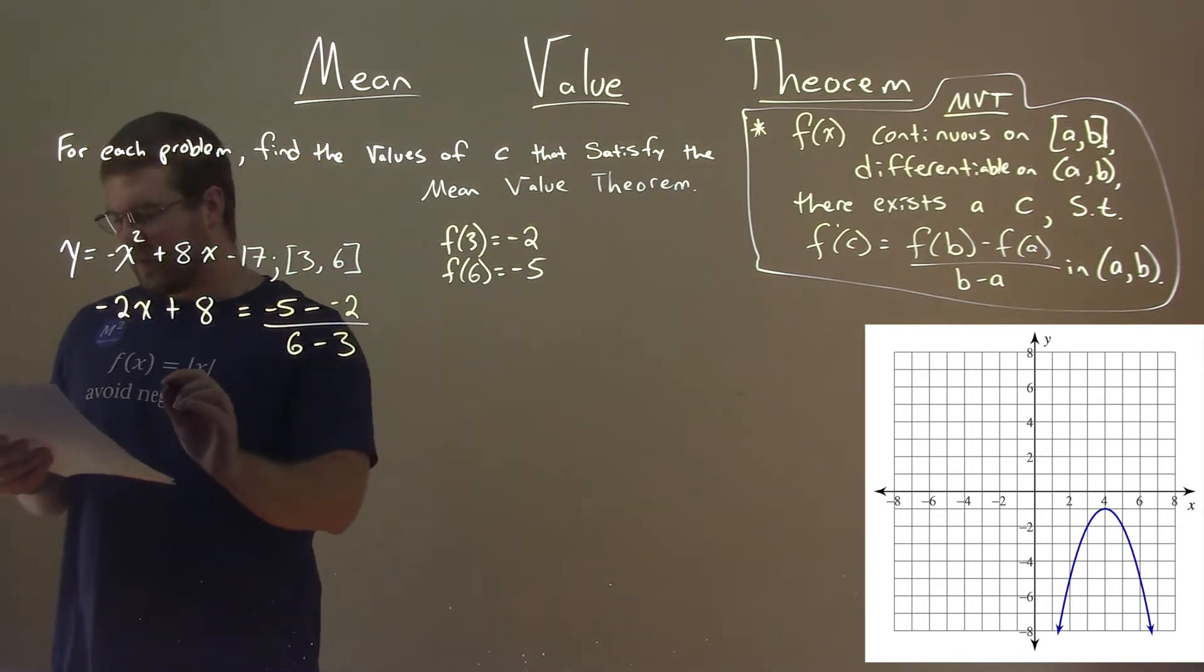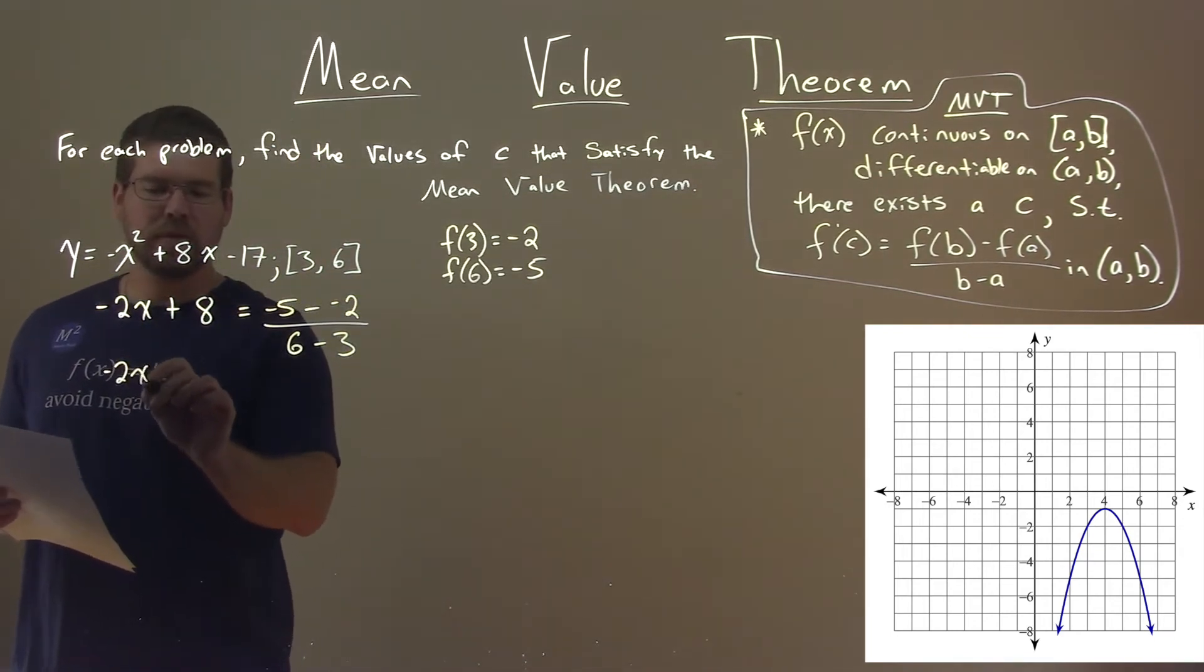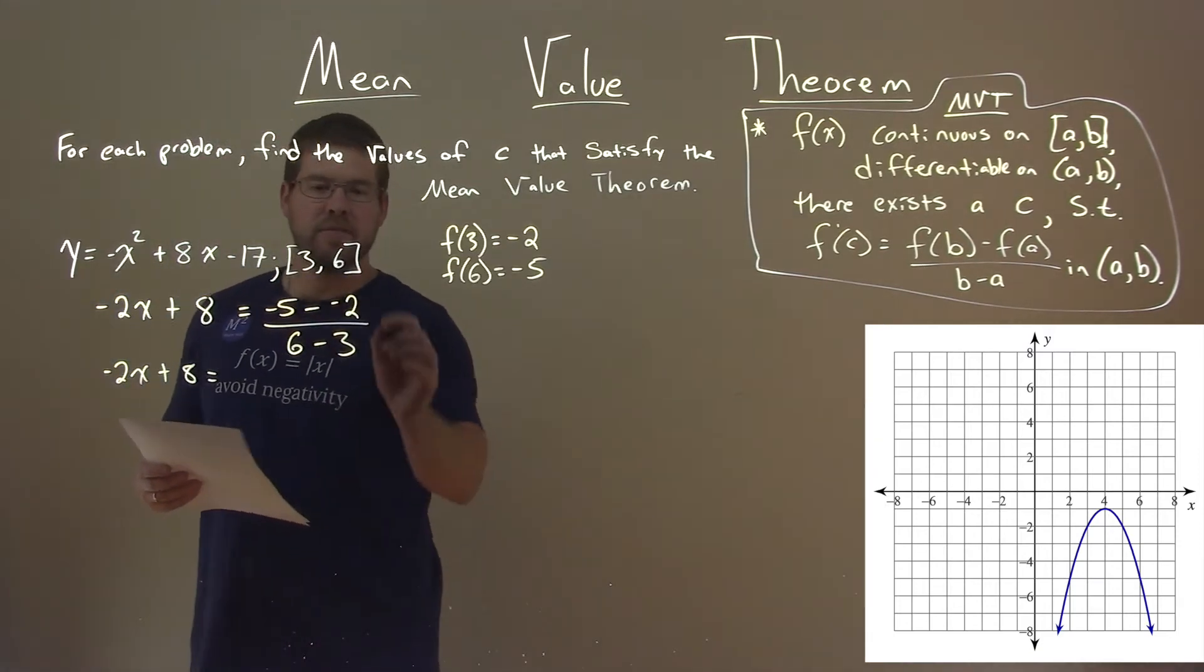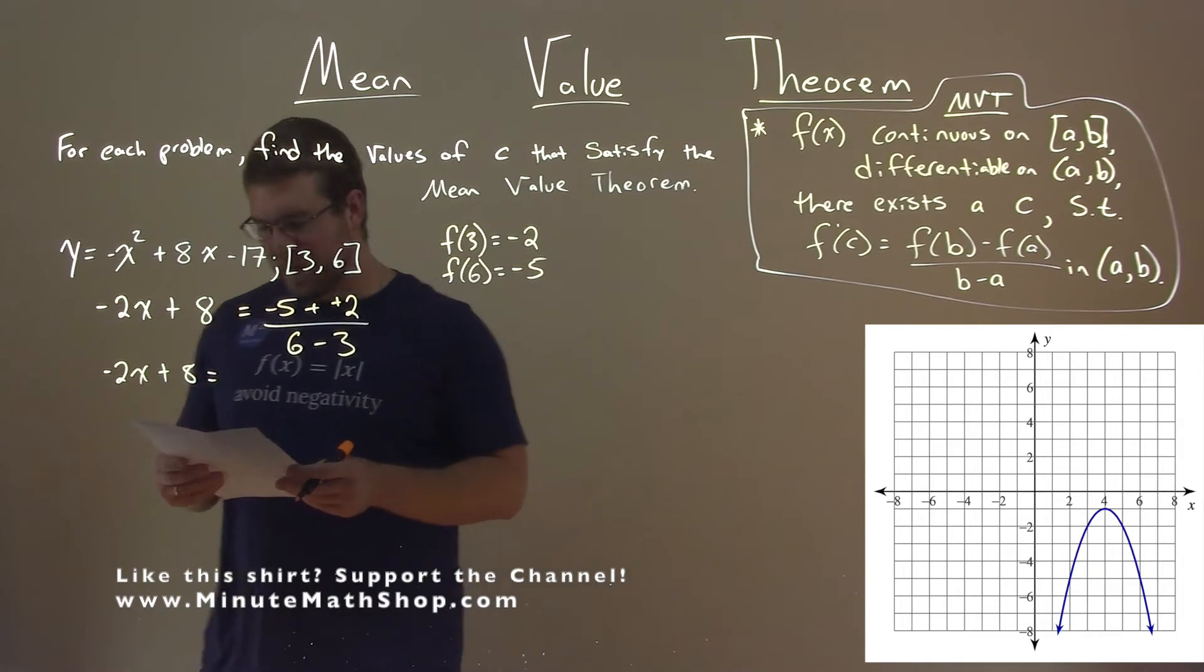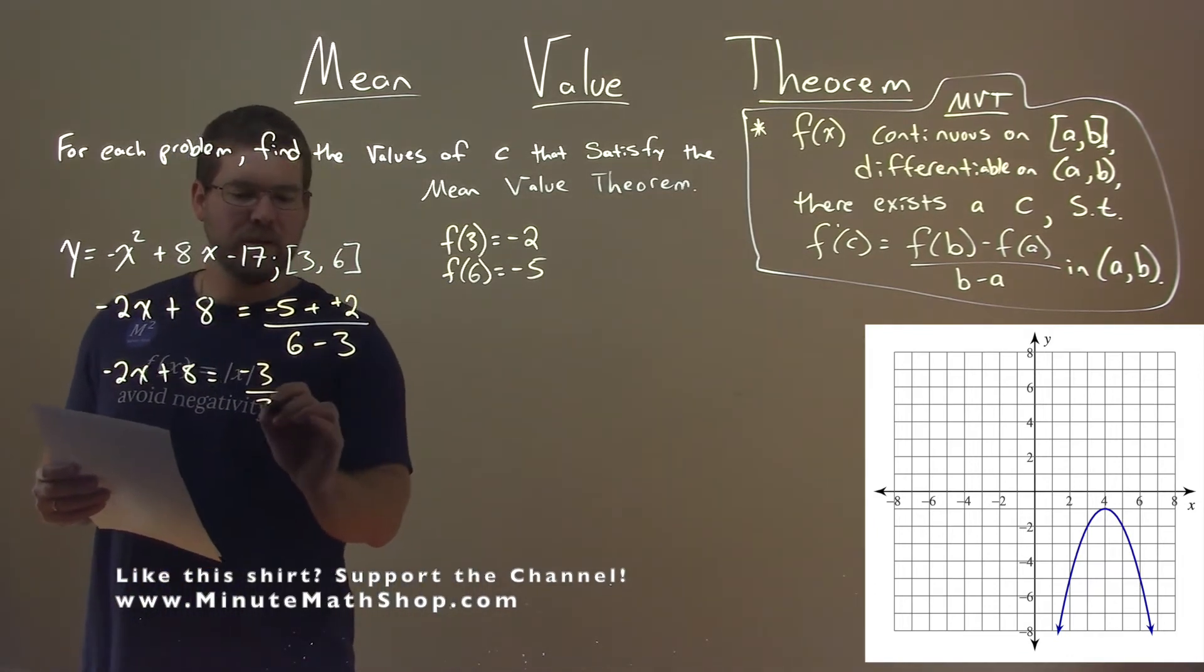From there we need to simplify this. We have negative 2x plus 8, and negative 5 minus negative 2 is like plus positive 2, and we're subtracting 6 minus 3. And so this comes out to be negative 3 over 3.